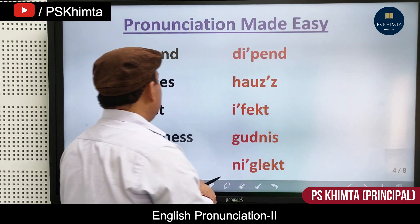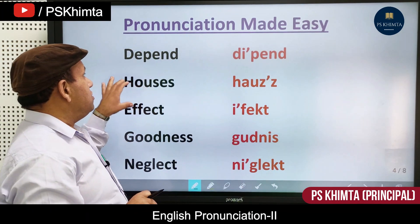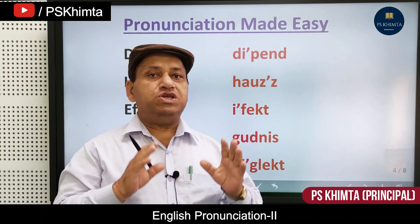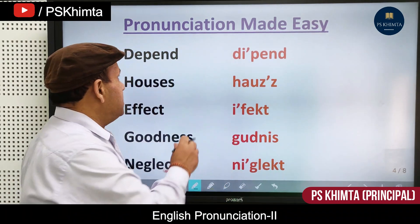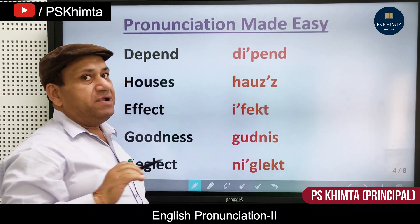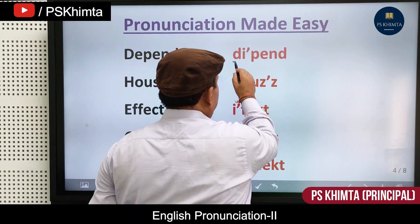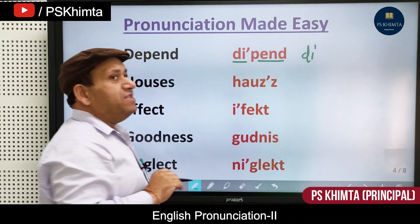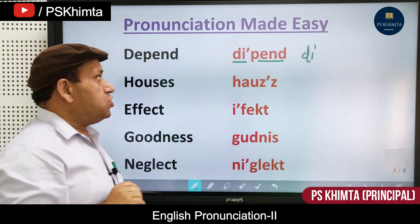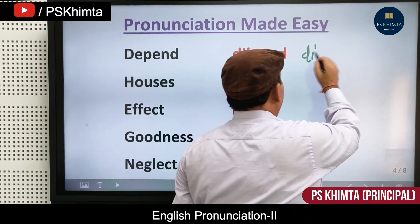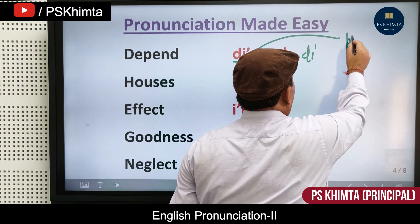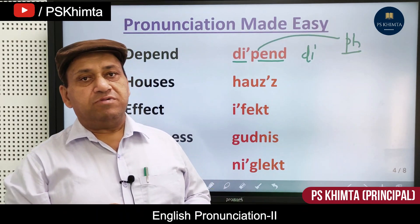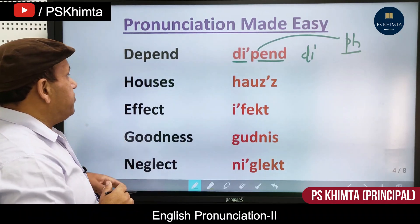Now we have 'depend' — a very commonly used word in daily life. We often say 'depend,' but we should first say 'de,' pause, then 'pend': depend. Also note the 'p' is spoken like 'ph' — so 'fend,' as in 'defend.' For example: 'We depend on others.'